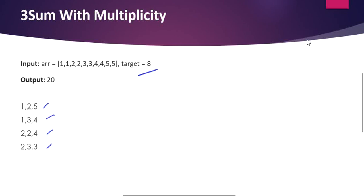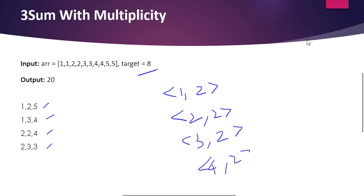If you look at the array, 1 appears 2 times, 2 appears 2 times, 3 appears 2 times, 4 appears 2 times, and 5 also appears 2 times. So if you consider the first combination 1, 2, 5, you have 2 ones, 2 twos, and 2 fives to consider. The total possible combinations of 1, 2, 5 forming 8 is going to be 6, considering all different arrangements of the available 1s, 2s, and 5s.